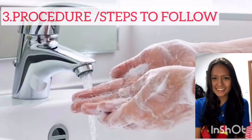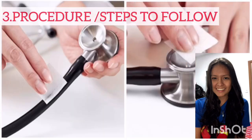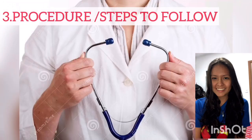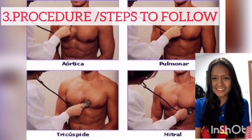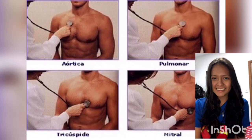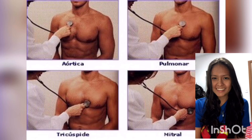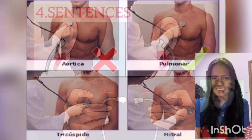Procedure steps to follow. You have to clean your hands. Clean the stethoscope with cotton and alcohol. Put on the stethoscope. Recognize the five points of cardiac auscultation and listen. 1. The aortic focus is located in the second right intercostal space on the side of the sternum. 2. The pulmonary focus located in the second left intercostal space. 3. The tricuspid focus located just below the xiphoid apophysis slightly to the left. 4. The mitral focus located in the fifth left intercostal space on the side of the sternum. 5. The accessory aortic focus located on the fourth left intercostal space on the side of the sternum.